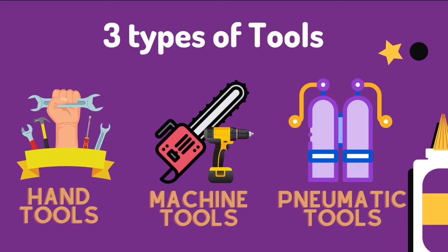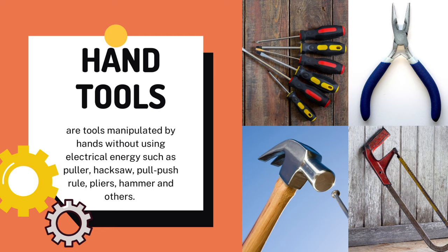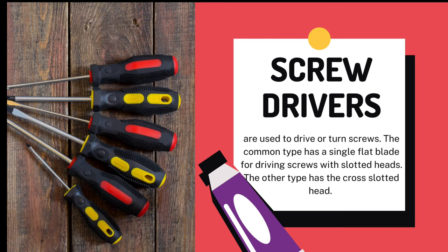We have three types of tools. First is the hand tool, second is the machine tool, and third is the pneumatic tool. Hand tools are tools that are manipulated by hands without using electrical energy. The first example is screwdrivers, which are used to turn screws. There are two classifications: the single slot head and the cross slot head.